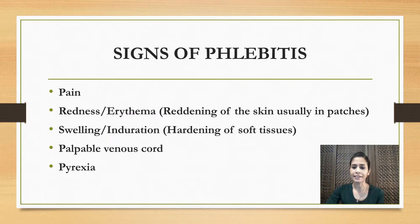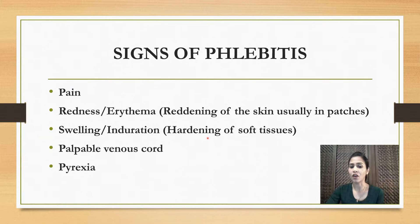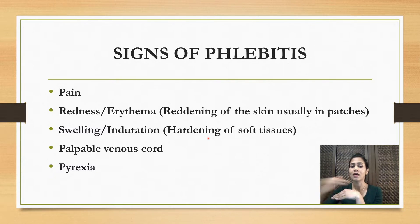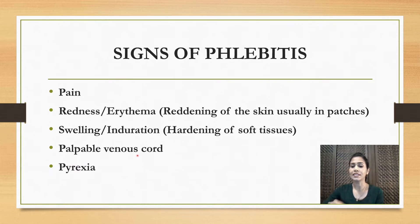Let's see the signs of phlebitis. The first one is pain. The second one is redness or erythema — erythema means reddening of the skin, usually in patches, that is severe redness. The third one is swelling and induration — induration means hardening of soft tissues, so when you touch you can feel hardening of the soft tissues around the IV cannula. The fourth one is palpable venous cord, so you can easily feel the hard vein. And the last one is pyrexia, that is fever.